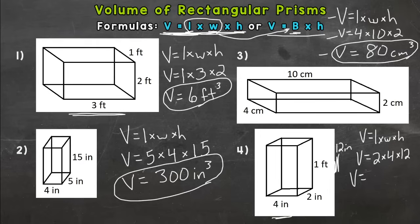Two times four is eight. And eight times 12 is 96. So 96 cubic inches.